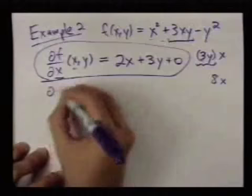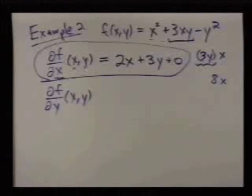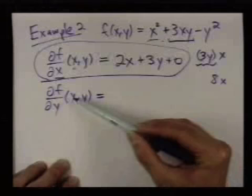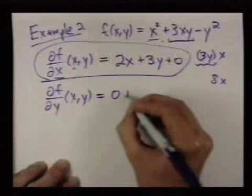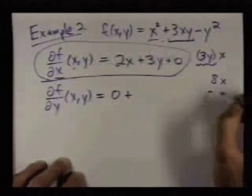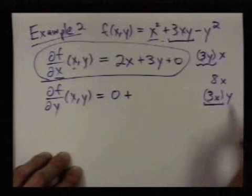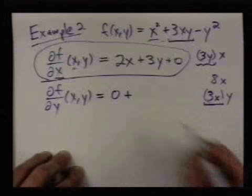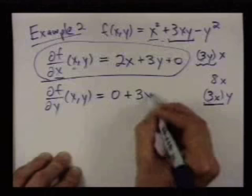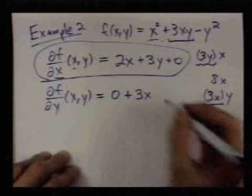Likewise, when we take partial derivatives with respect to y, we think of x as a constant and take a derivative with respect to y. So now when I look at this, I see x squared, which I'm thinking of as a constant because only y is changing. So the derivative of that part is 0. Now I have 3xy where I'm thinking of it like this. Namely, I think of 3x as a constant times y. So if I had a number times y, the derivative of that would just be the number. So for this first part, the partial with respect to y is 3x. And then for this last part, the derivative of this with respect to y, thinking of x as a constant, is minus 2y.